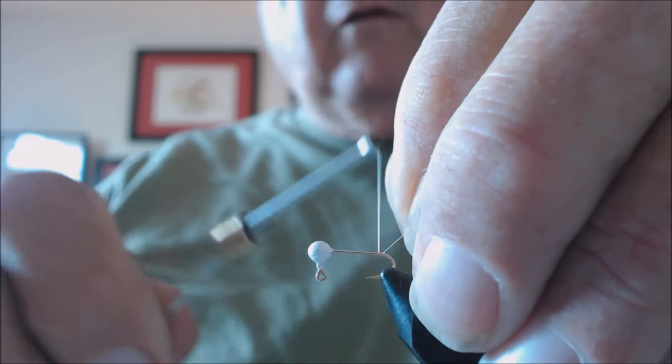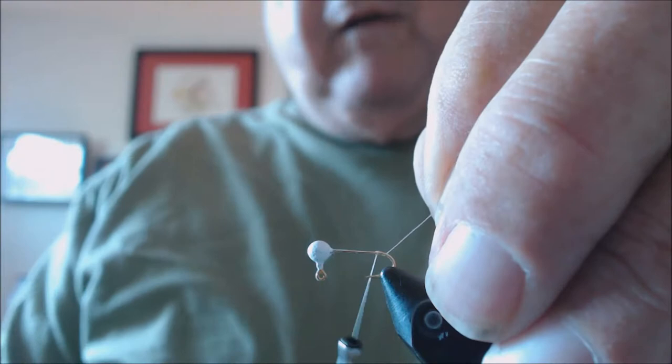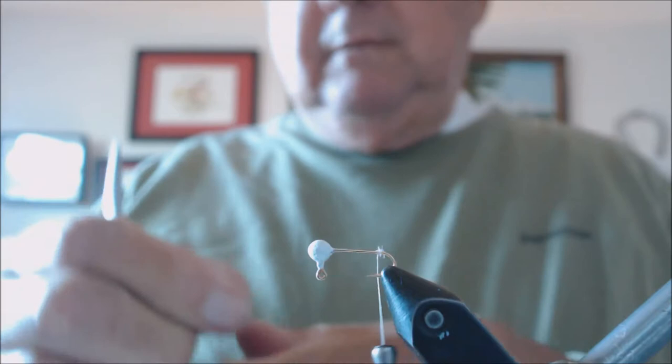We're going to start our thread right above the barb. Although I pinched the barb down here, we're starting the thread at the place where the barb would be. Make five or six wraps. Cut off our tag end.